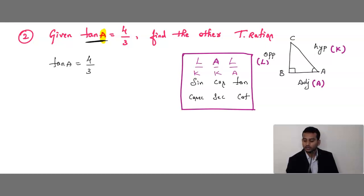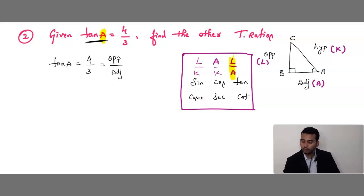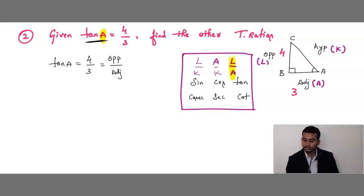Is this clear? So we have found all the trigonometric ratios: sin, cos, tan was given, cosecant, secant, and cot. Whenever you get this type of problem — first find all three sides using Pythagoras if one side is missing, then substitute all the values. Let them give any problem based on this type, first find the other side using Pythagoras statement.